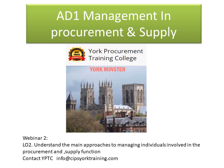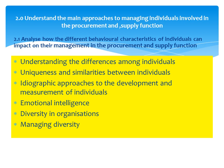The learning outcome for this section is to understand the main approaches to managing individuals, and to analyze how different behavioral characteristics of individuals can impact upon management in procurement and supply. That question has been asked twice before and has been linked to a case study — how can behavioral characteristics impact on Fred, Mary, and their new job in procurement? Behavioral characteristics include differences and uniquenesses among individuals.